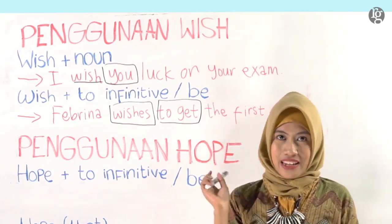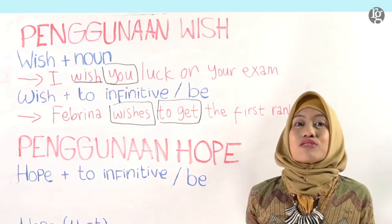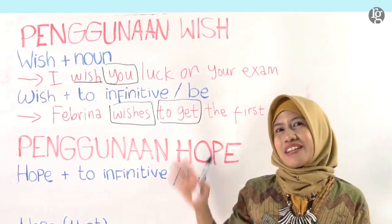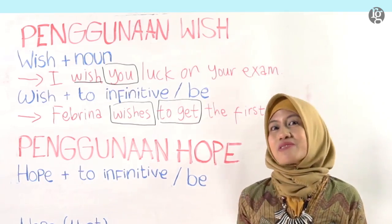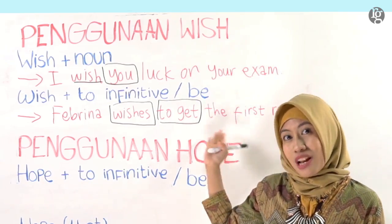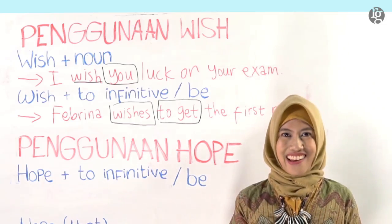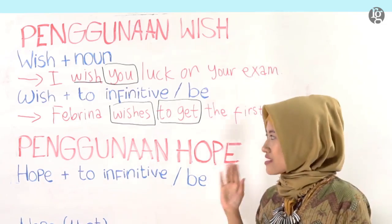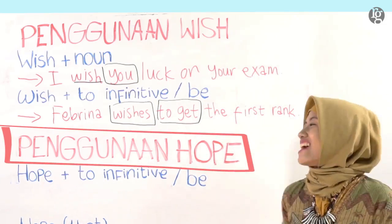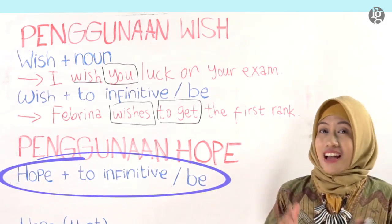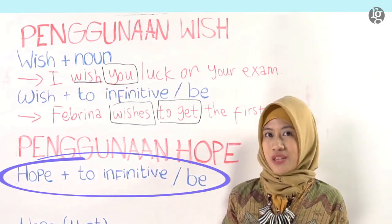Untuk pola yang ini, sebenarnya bisa saja kakak bilang Vibrina wants to get the first rank. Jadi ini merupakan bentuk formalnya, atau kalian bisa menggunakan pola seperti ini untuk menyatakan harapan dalam situasi formal. Kita langsung ke penggunaan selanjutnya yaitu penggunaan dengan kata kerja hope. Yang pertama adalah pola kata kerja hope diikuti dengan to infinitive atau diikuti dengan to be.